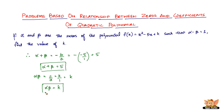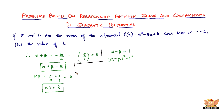So we have alpha + beta and alpha * beta. Now we need to find the value of k such that alpha - beta = 1. Squaring both sides, we get (alpha - beta)² = 1². Now let us expand this.